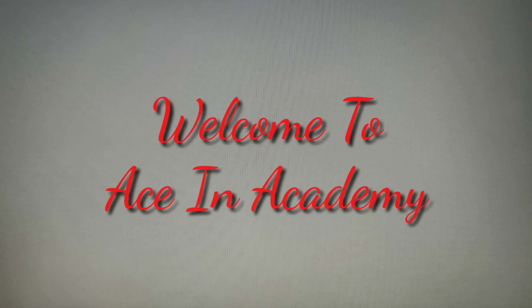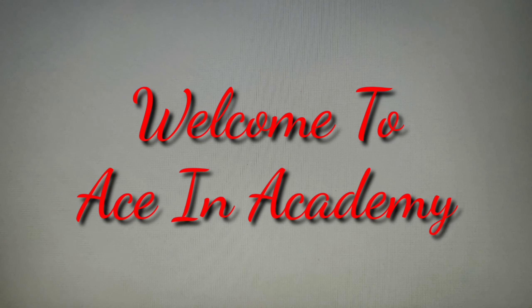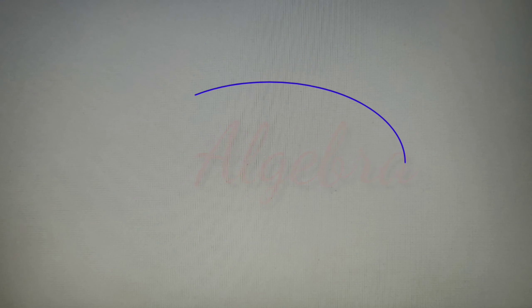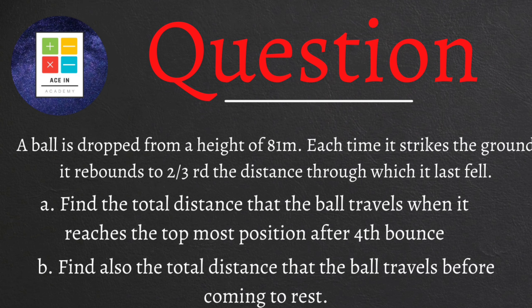Hello everyone, I am Shampasari and welcome to Ace in Academy. As you can see from the title of this video, we'll solve another question on the topic of algebra and this question is a two-part question. A ball is dropped from a height of 81 meters. Each time it strikes the ground, it rebounds to two-thirds the distance through which it last fell. Part A is to find the total distance the ball travels when it reaches the topmost position after the fourth bounce. Part B is to find the total distance the ball travels before coming to rest. I would like you to try this question first by yourself and then come to this video for the solution.